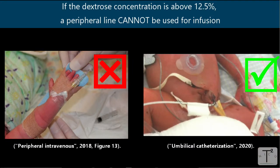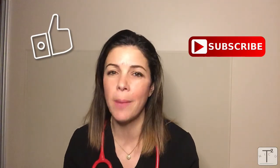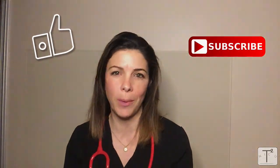Remember, if your dextrose concentration goes above 12.5 — so above D12.5 — then you cannot put that through a peripheral IV. Dextrose concentration above 12.5 has to go through a central catheter. And that's it about G.I.R. I hope you learned something today. Please remember to like and subscribe, and comment below with any other topics you'd like me to discuss. Thank you.